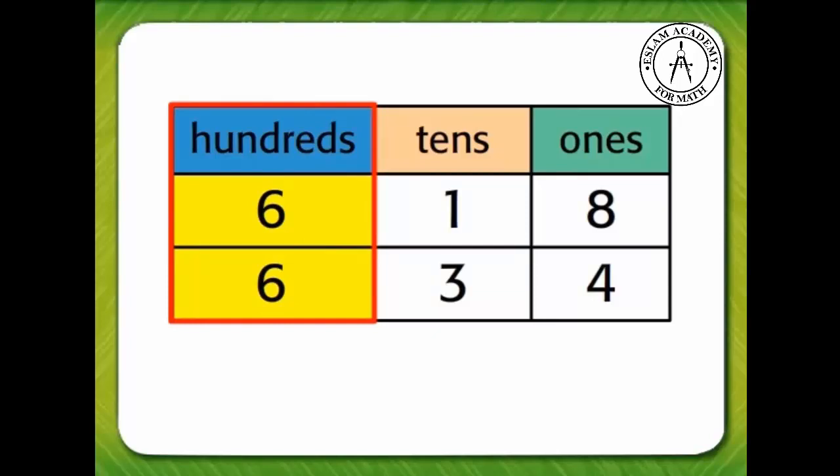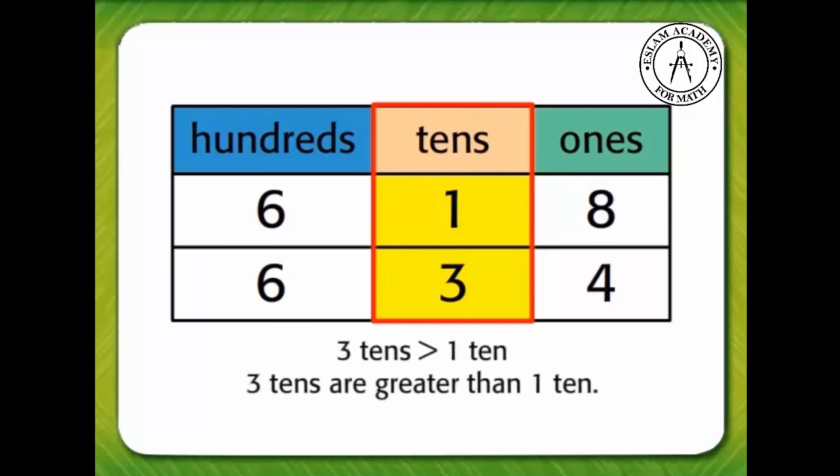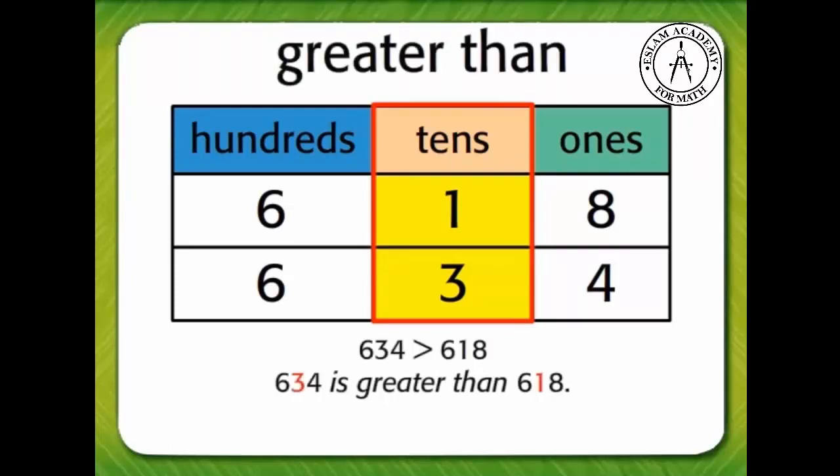Since they are the same we can look at the tens next. The tens are not equal. We can compare these digits to find the greater number. Three tens are greater than one ten. So 634 is greater than 618.